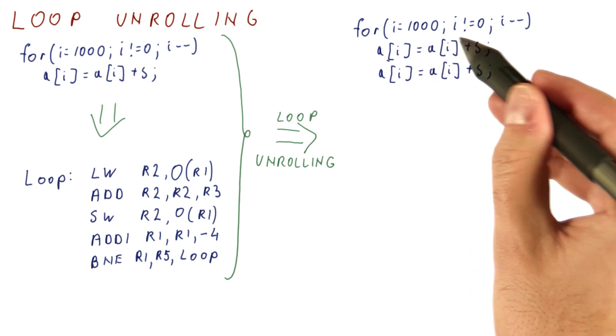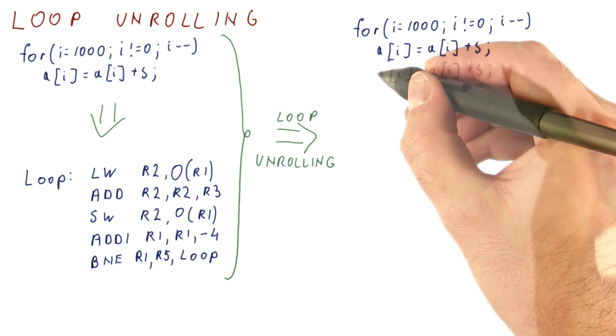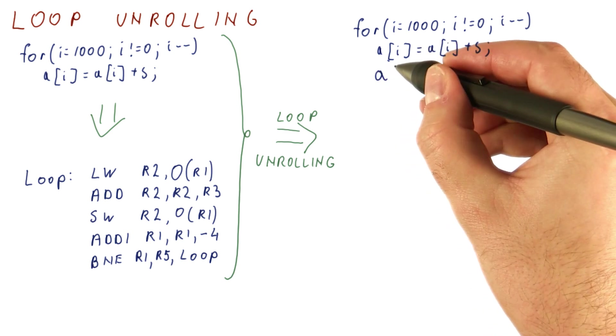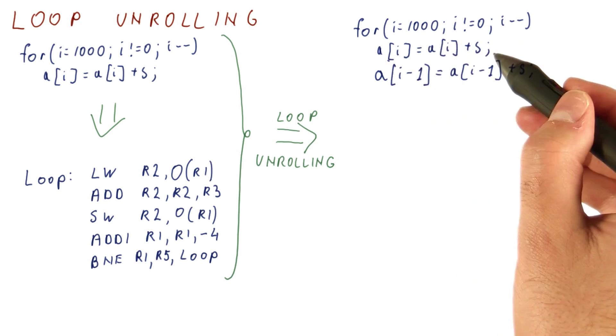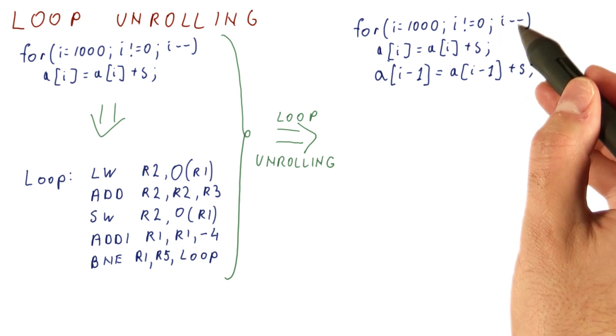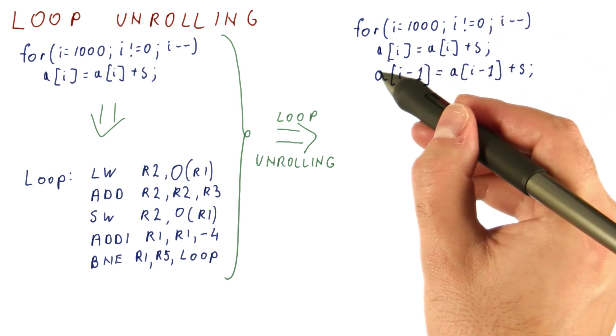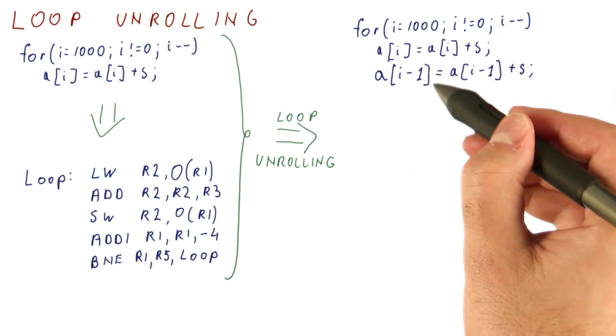However, if we just do it this way, then we are doing the same work twice. So instead what we will do is we will adjust the index so that this is doing the ith element of the array. And then i would be decremented and the next iteration would now do a of i minus 1.